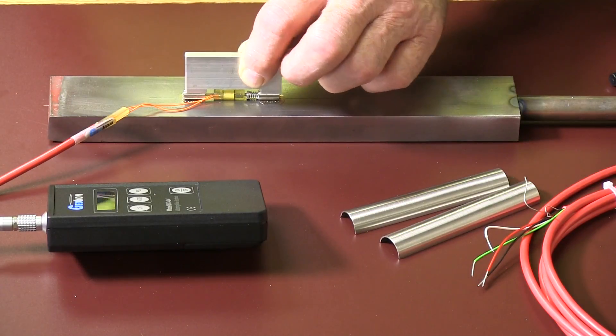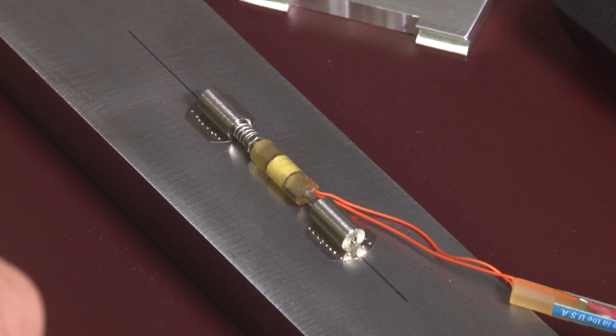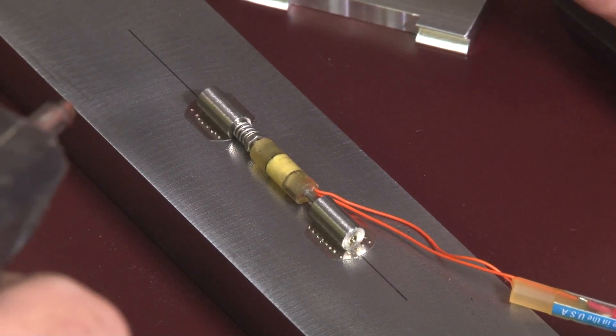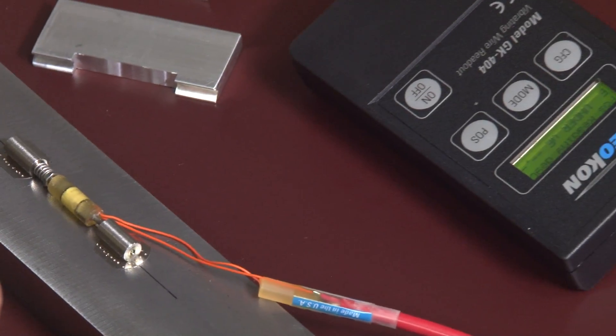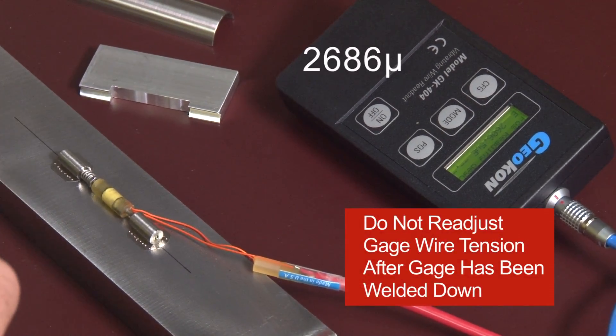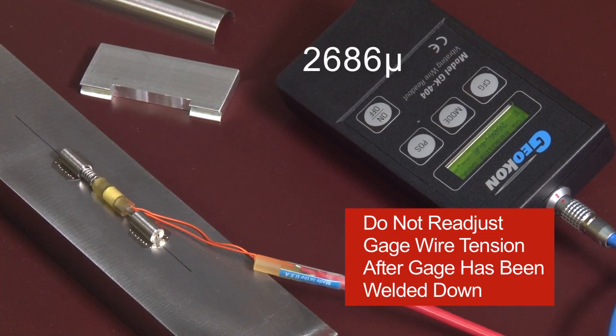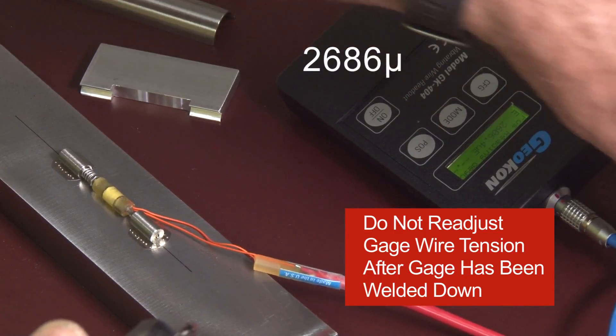We've finished the primary spot welds. The next step is to check the reading. 2686, so it went up a little bit during the operation, but it's perfect. It's right in the mid-range of the gauge.